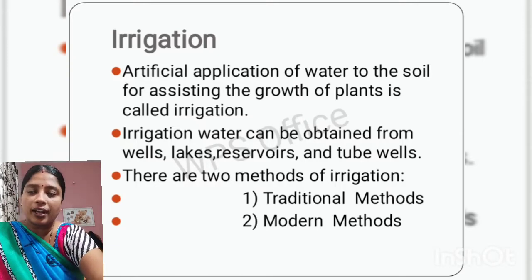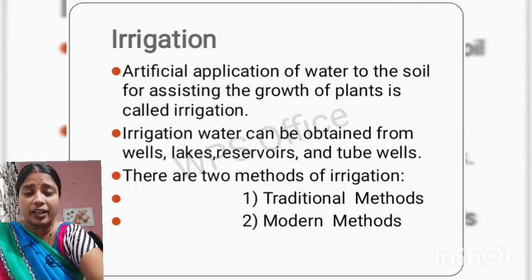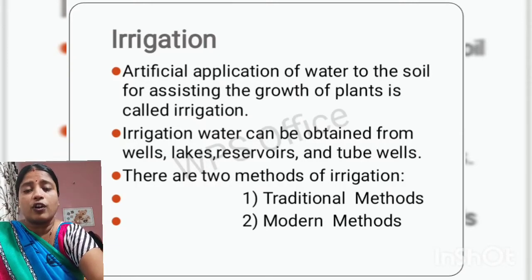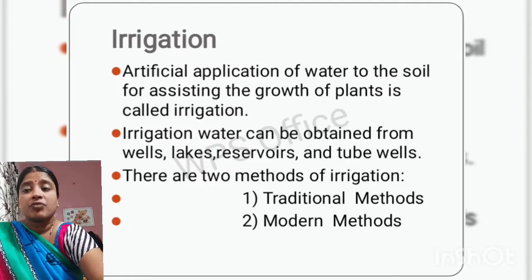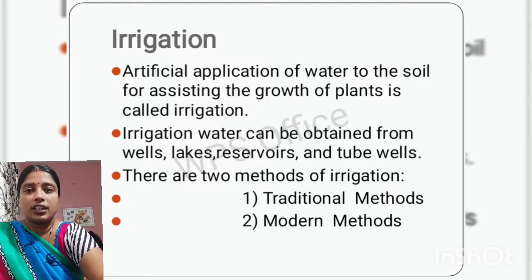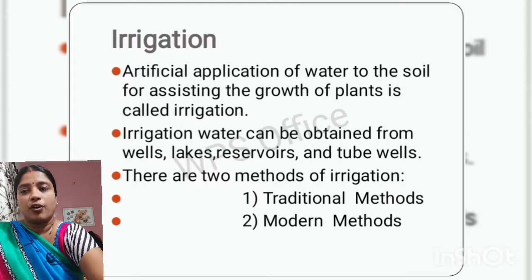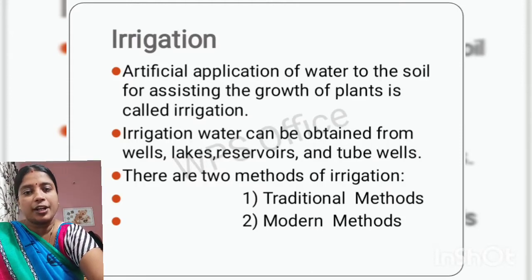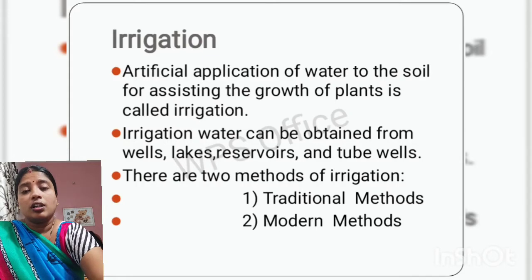How can we obtain water for irrigation? We get water for this artificial application from wells, lakes, reservoirs, and tube wells.